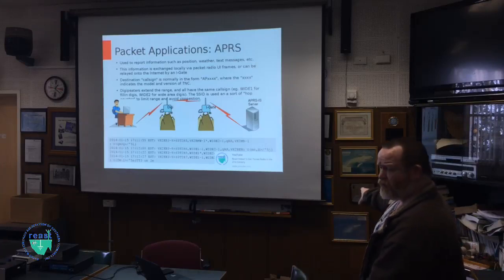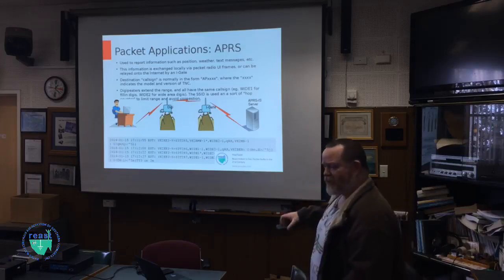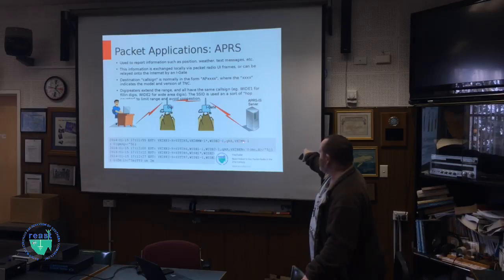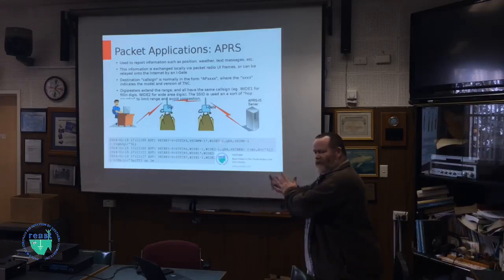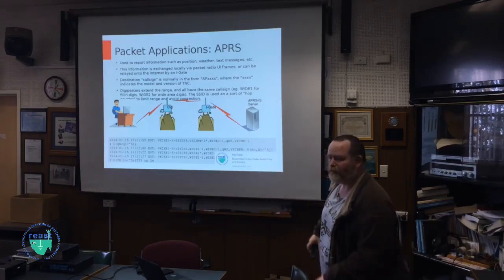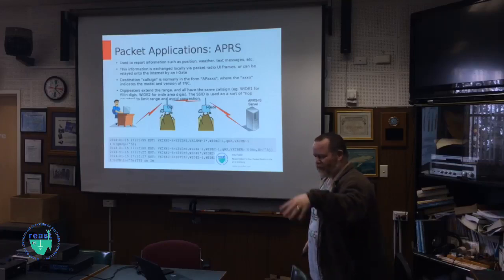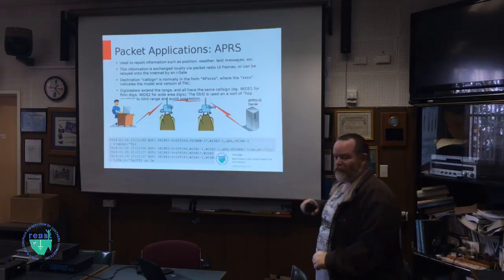They came up with a new system using a countdown on the end. They changed 'wide' so you could have up to wide seven-dash-seven, meaning seven actual digipeaters. Generally you would use wide two-dash-two or three-dash-three — you wouldn't go above that because you're just propagating your information too far. The two numbers are a countdown: if it originated as two-dash-two and got digipeated, it drops to two-dash-one, and so on. It's like keeping the packet within a zone — like a subnet or cell — so your packet doesn't travel further than needed.